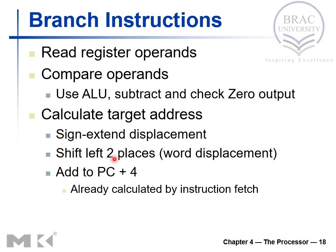For the displacement we need to left shift by two places, putting two zeros in the LSB positions, and then add it to PC+4. We know that during the fetch stage the program counter's value gets incremented by 4, becoming PC+4, so no matter whether we execute sequentially or branch, we add PC+4 with the branch offset.